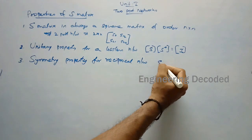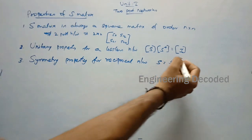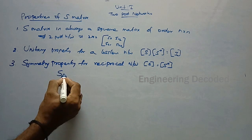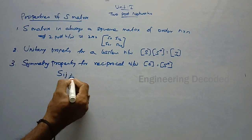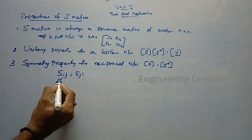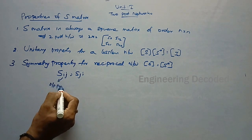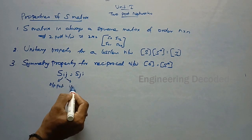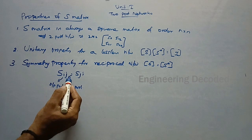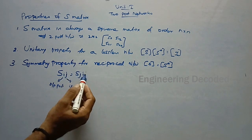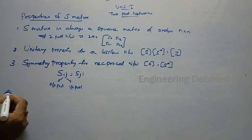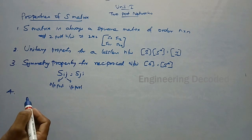The third property is the symmetry property. You can express it as S = S* or S = S-transpose, or more specifically as Sij = Sji. Here the first subscript represents the output port and the second represents the input port. This means you can interchange the input and output ports and the output should remain the same. A network satisfying that condition is called a reciprocal network.